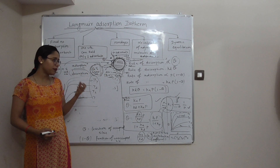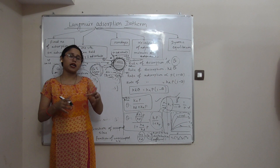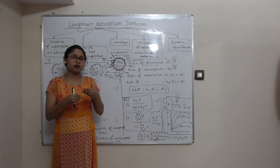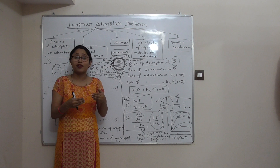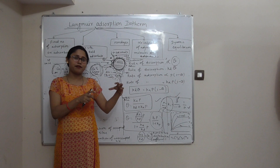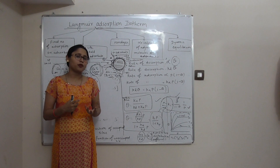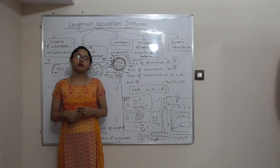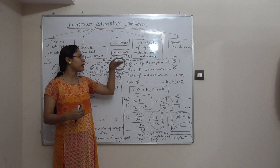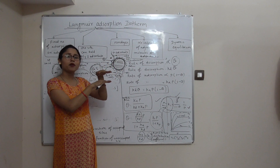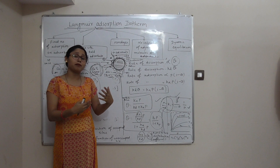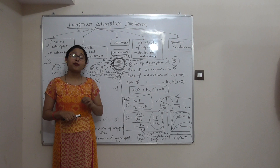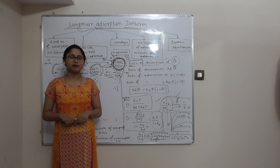Adsorption is a surface-dependent phenomenon and is a consequence of surface energy. It occurs due to unbalanced residual forces or unsaturation sites present on the solid or liquid substrate. Langmuir adsorption isotherm applies specifically to chemical adsorption, where bonds formed on the surface between molecular species and the adsorbent may be covalent or ionic in type. Thank you for listening. Take care.